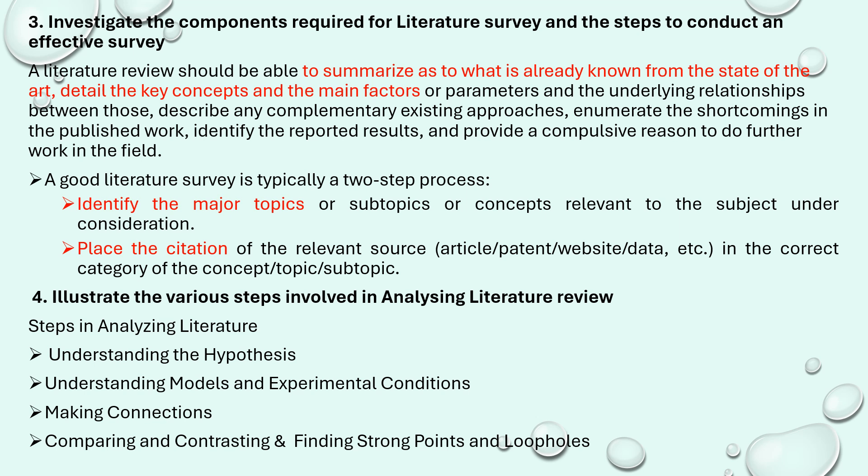Fourth question: illustrate the various steps involved in analyzing a literature review. The steps are: first, understanding the hypothesis — understand the problem statement fully, asking how, what, when, and why, before moving to the solution. Second, understand the model developed through a block diagram. Third, understand the experimental condition — whether it is an algorithm, a formula, or a mathematical model. Fourth, make a connection between the hypothesis and the model. Fifth, compare and contrast — identify the pros and cons of each review, find the strong points and the loopholes in the reviews.